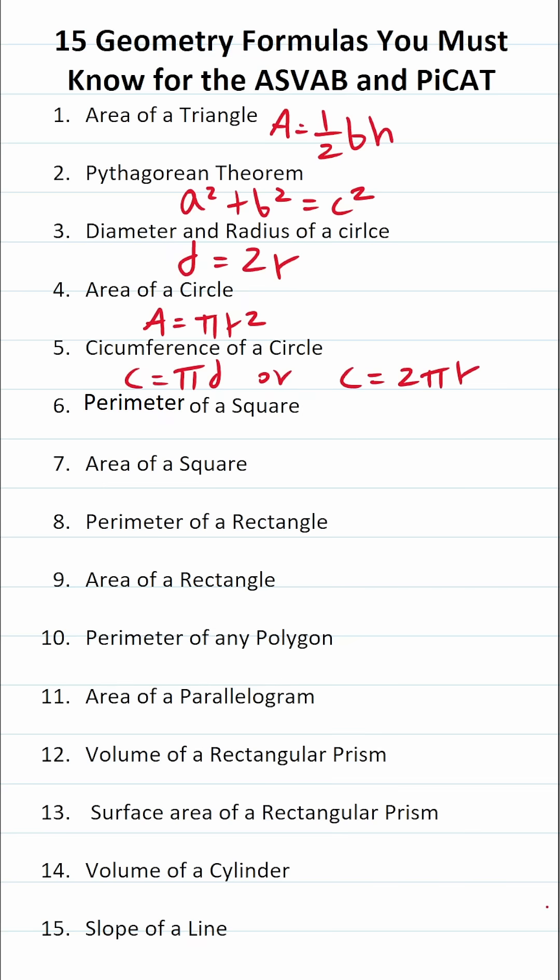You have to be able to calculate the perimeter of a square. That's going to be 4 times its side length s. You have to be able to calculate the area of a square. That's going to be its side length squared.